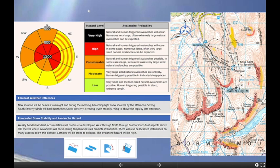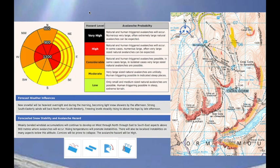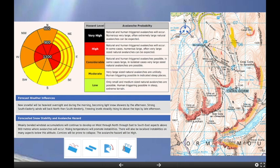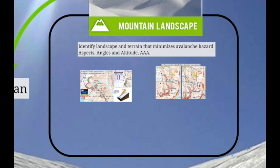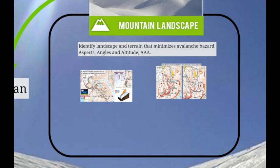The map on the right-hand side here is not actually on the SAIS website. This is just to illustrate what is going on in our heads when we process information from the forecast. We need to be able to look at a mountain map and translate the information that's in the avalanche forecast onto the map. So we need to identify altitude and aspect, steep ground, and identify where the hazard is on the map so we can avoid it on the hill.